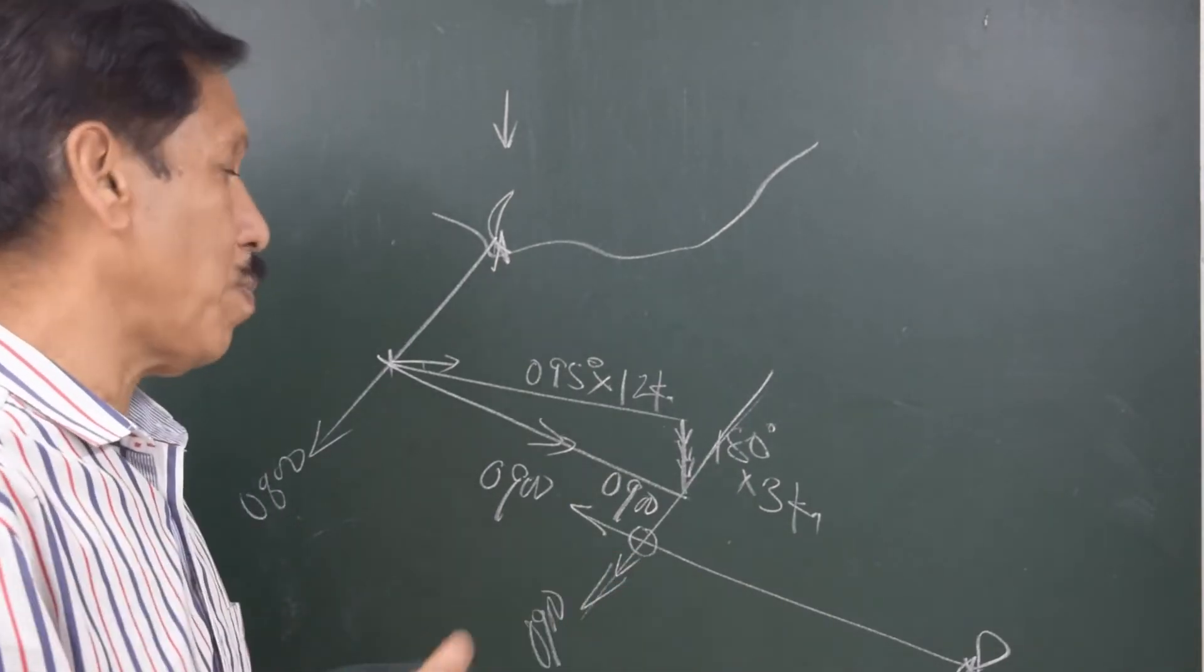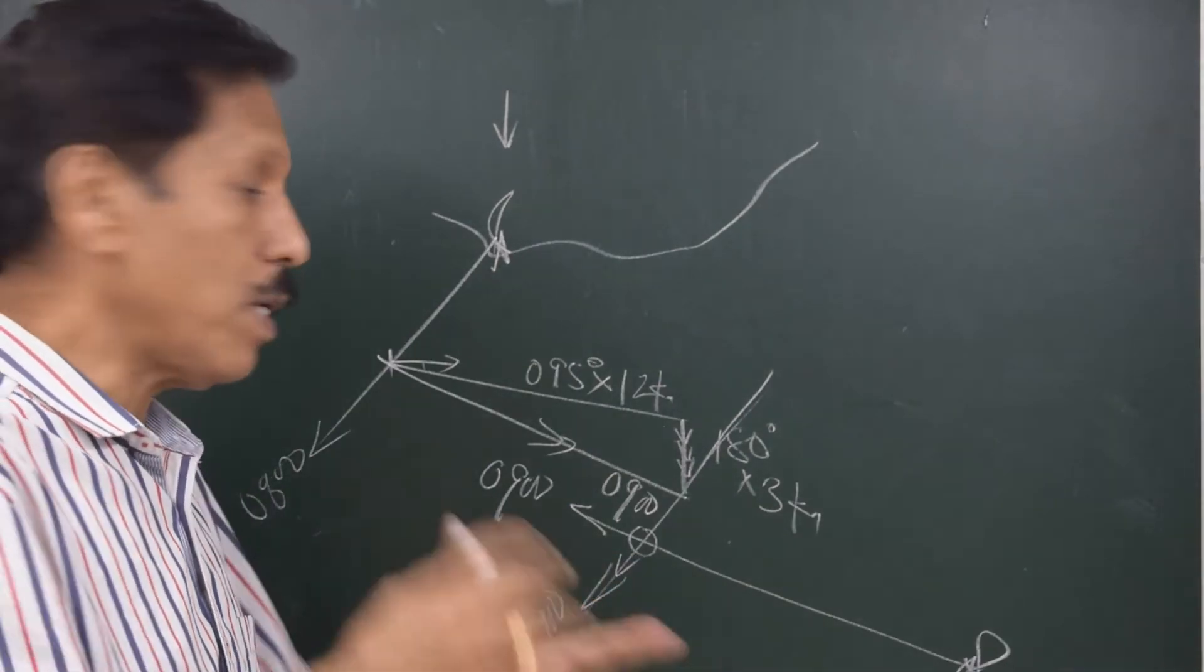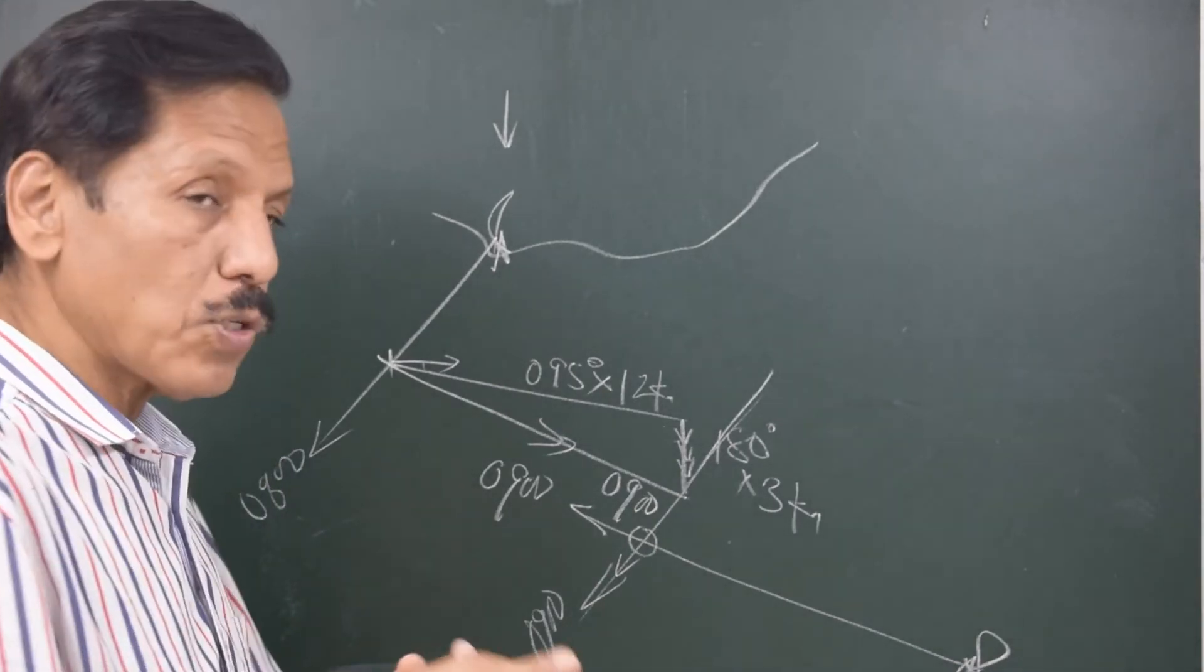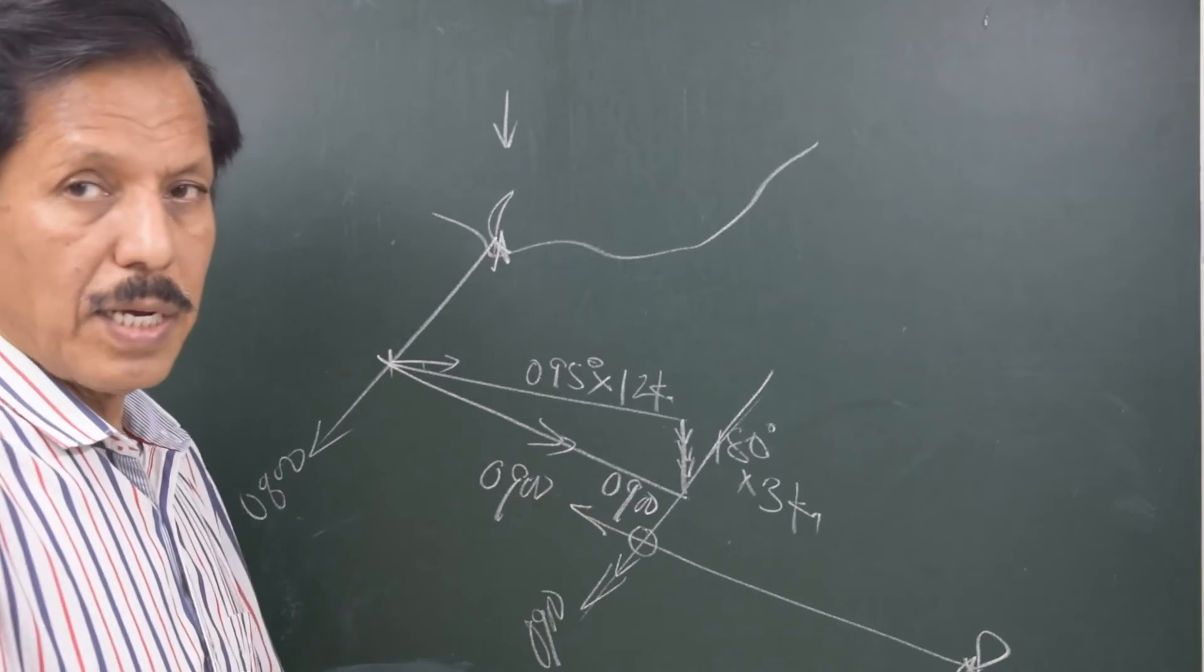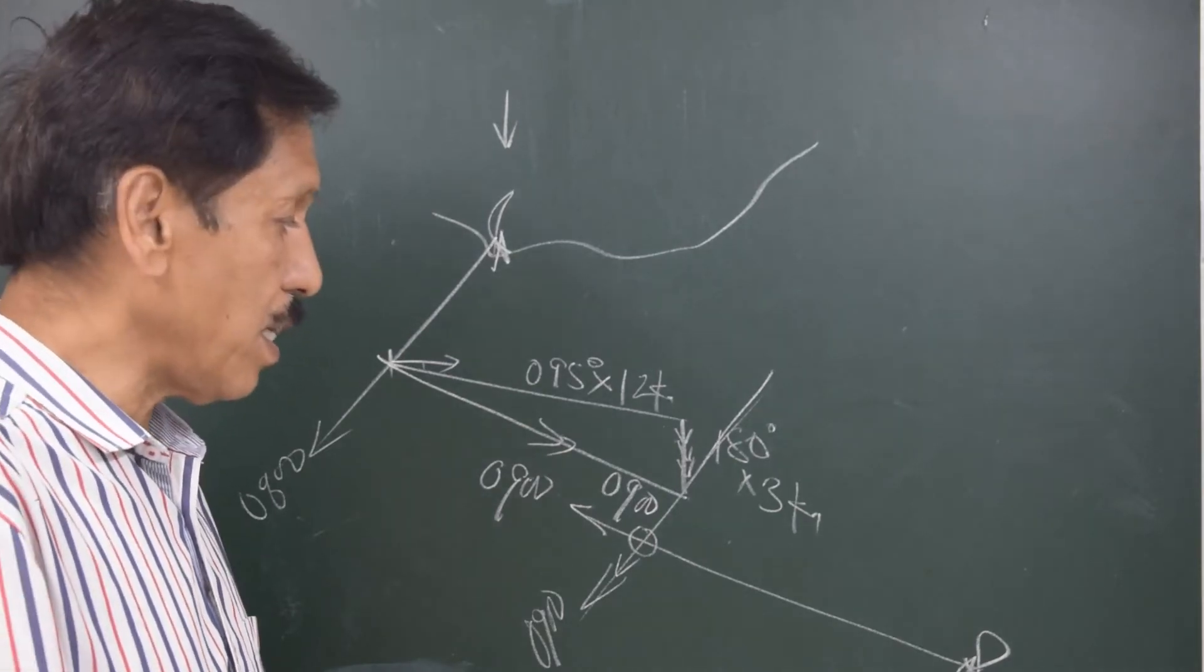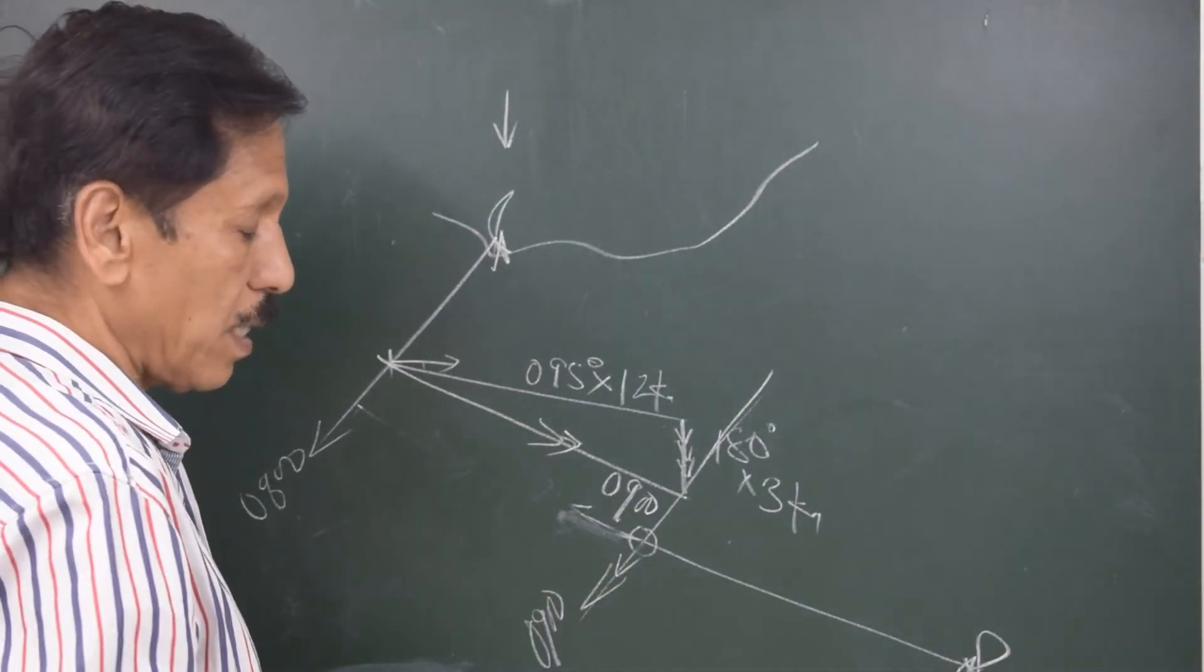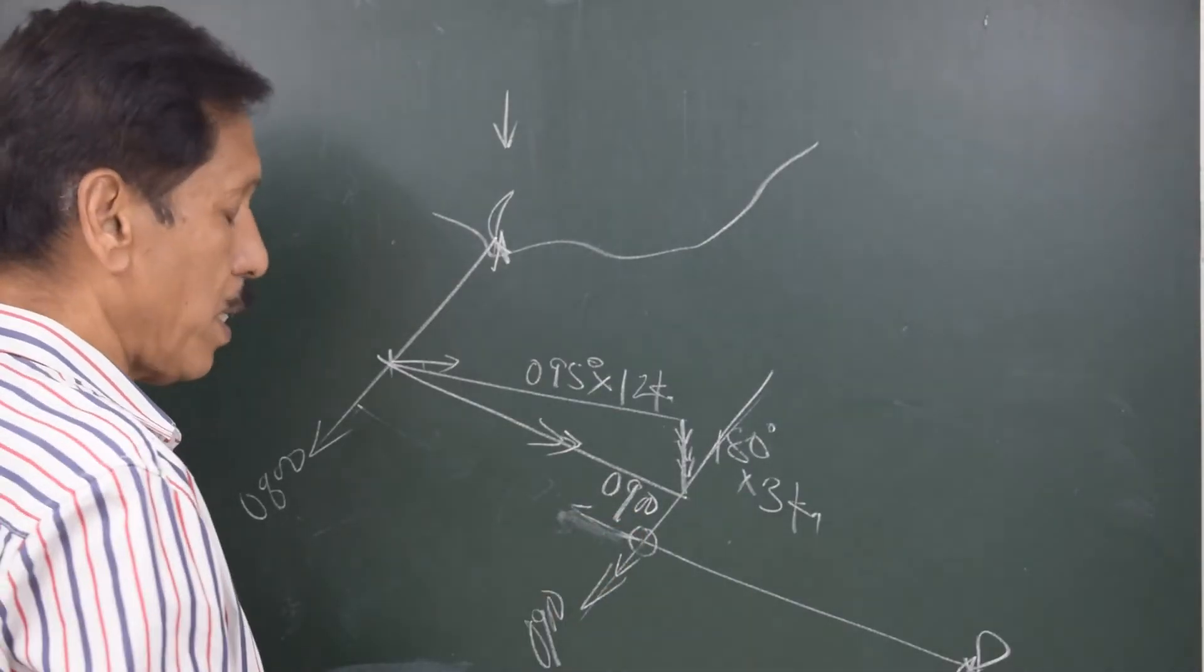Any position line, any transferred position line or any fix, whether simultaneous or running fix, it has to be given time. Otherwise, as I told you before, you are inserting the position line or you are inserting the fix. If this is the 9 o'clock position, that is the running fix, where was the ship at 8 o'clock?